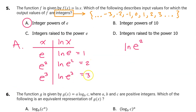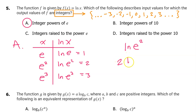Let me say a bit more about why this works. We have natural log of e squared. Using the power rule, we move the 2 to the front: 2 times natural log of e. Since natural log of e is 1, this becomes 2 times 1, which is 2. That's why you just get 2, and by the same reasoning, e cubed gives 3.